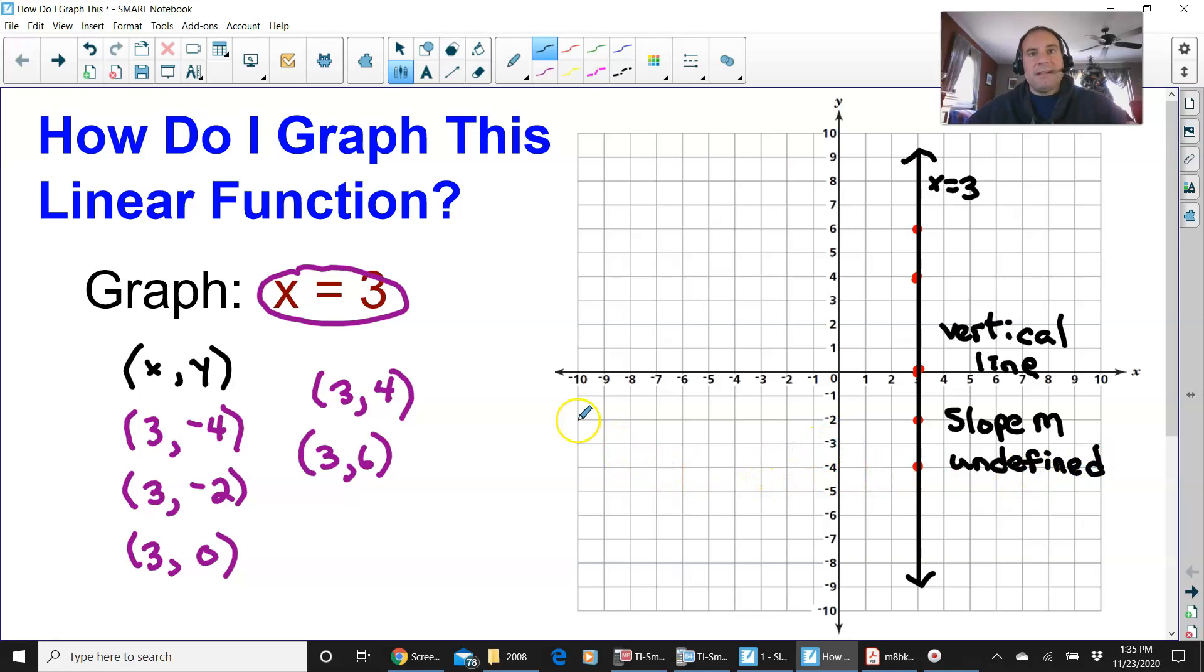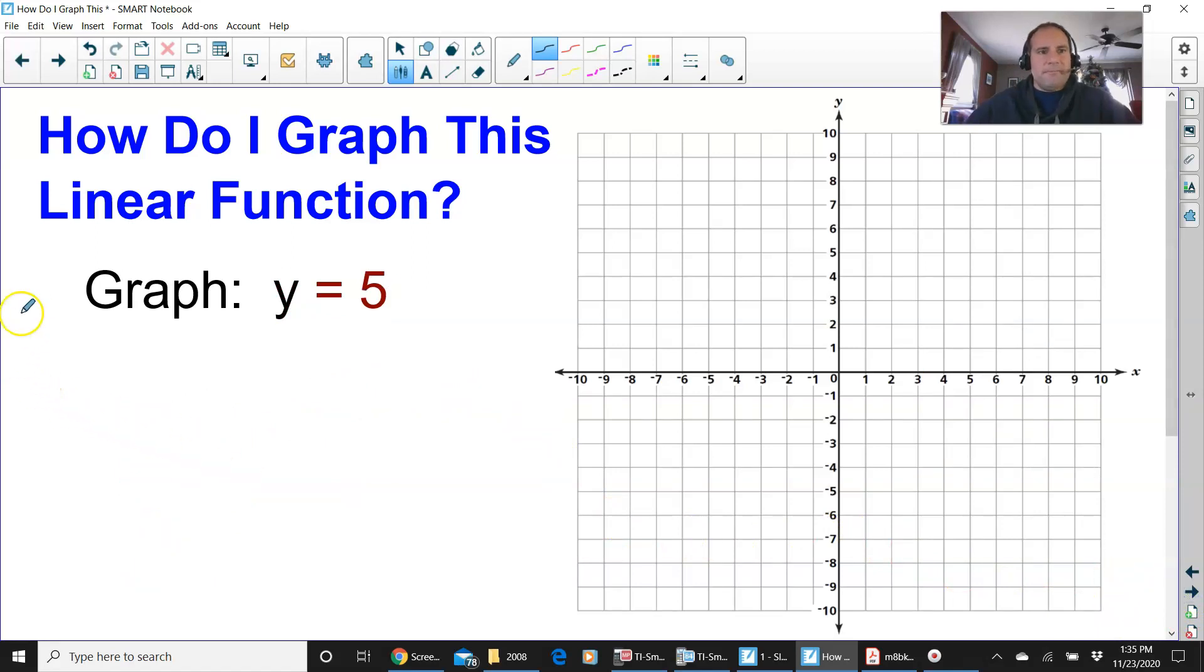And that's it. How easy is that? Little trick, x equals whatever number, you just have to put that number as your x coordinate. Just put random y coordinates. One more time. But now, it's y equals 5. What do you do? Well, set up the same thing.